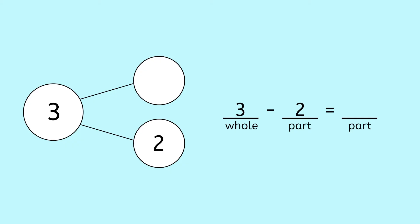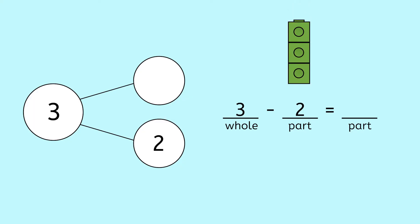Three minus two equals... Let's use a strategy to find our answer. I can build a tower of one, two, three snap cubes. Then, how many will I take away? Two — one, two. Now, how many do I have left? One. The missing part is one.